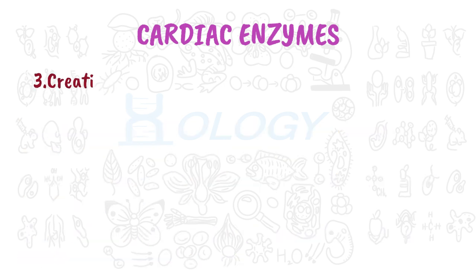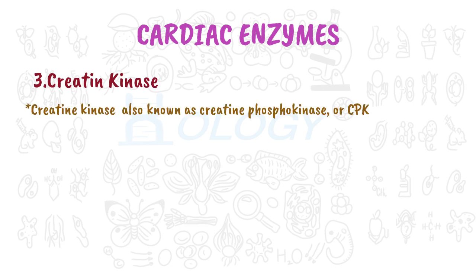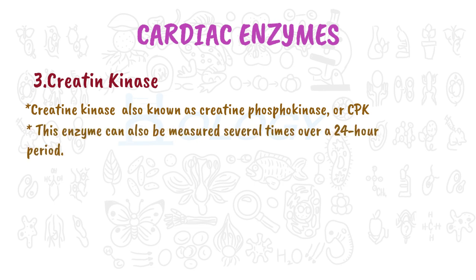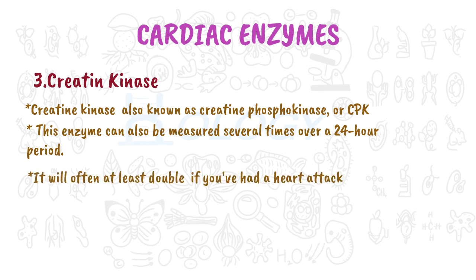Creatine kinase (CK), also known as creatine phosphokinase or CPK, is another enzyme that can be measured several times over a 24-hour period — it will often at least double if you've had a heart attack. The MB type is specific to myocardial cells, whereas MM and BB are specific to skeletal muscle and brain tissue, respectively.